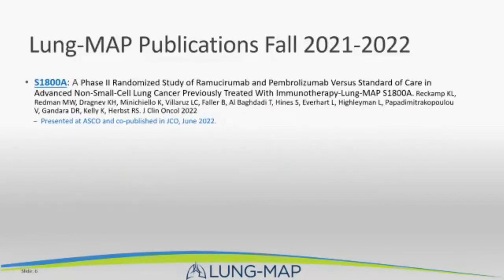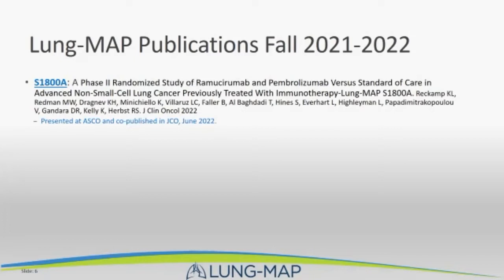The major publication we had — the study S1800A — was a randomized phase 2 study looking at pembrolizumab and ramucirumab versus standard of care for patients who had previously received immunotherapy and platinum-based chemotherapy. Standard of care in this setting — docetaxel or docetaxel-ramucirumab — had been standard for many years with little gains. This study was presented at ASCO and co-published in JCO. We analyzed the data in January or February of 2022 and published it in June 2022.